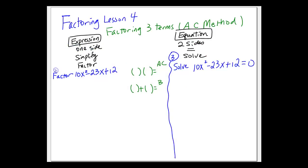A common question is: when do you just factor, and when do you solve for x? When you are given an expression — meaning you only have one side — you can only simplify or factor it; you cannot solve for x. In example 2, they ask you to factor 10x squared minus 23x plus 12. This is an expression, so all you can do is factor. In example 3, they ask you to solve, and it comes with an equal sign — because you are given an equation, you can solve for x.